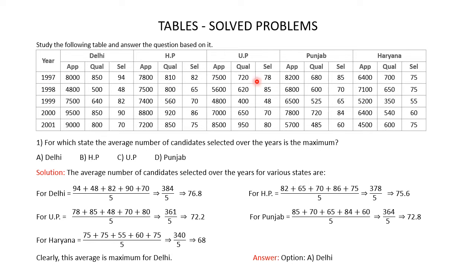Based on all this information, you have to answer the given questions. The first question: For which state is the average number of candidates selected over the years the maximum? You are given four options and you have to find out which is the correct one. You are asked to find out for which state the average number of candidates selected over the years is the maximum.